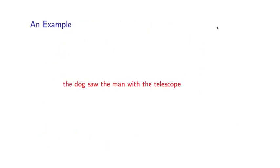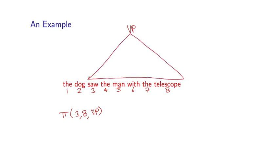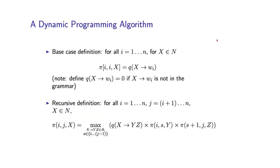To re-emphasize what this definition means, here's a concrete example. If I number the words 1 through 8 and I look at pi(3, 8, VP), that means I'm going to consider all VPs which span words 3 to 8 inclusive. In particular, there might be at least a couple of VPs — one where the telescope is modifying 'saw' and one where the man has the telescope. Those correspond to two different parse trees. Pi(3, 8, VP) is going to be the highest probability for any of those different parse trees spanning those words.